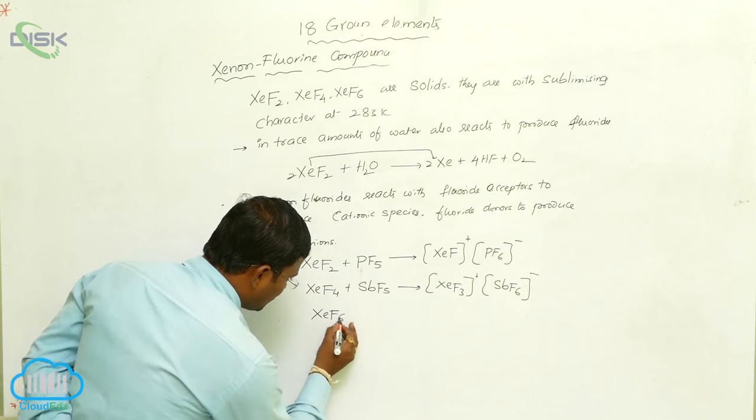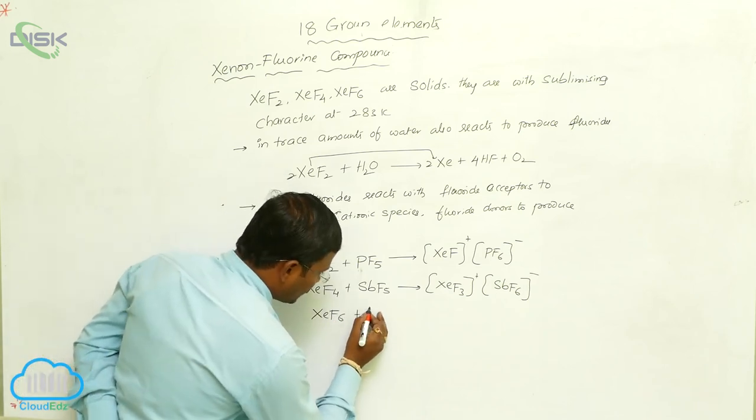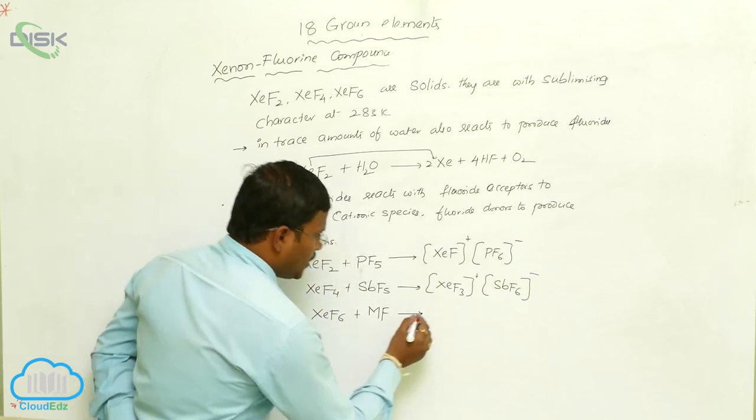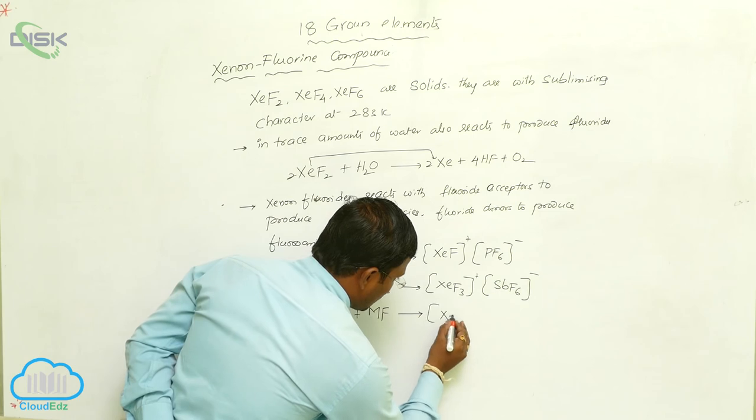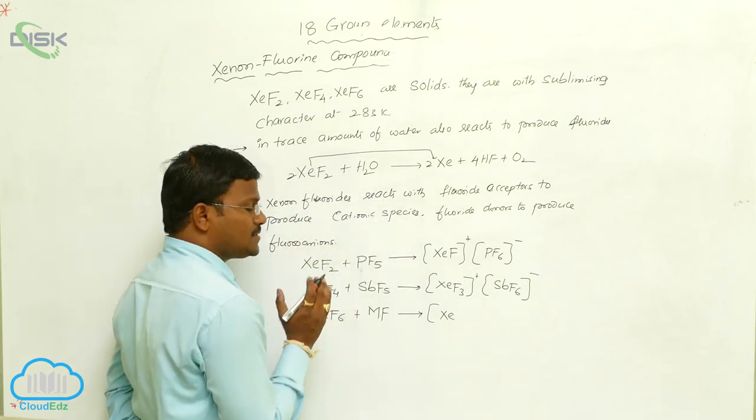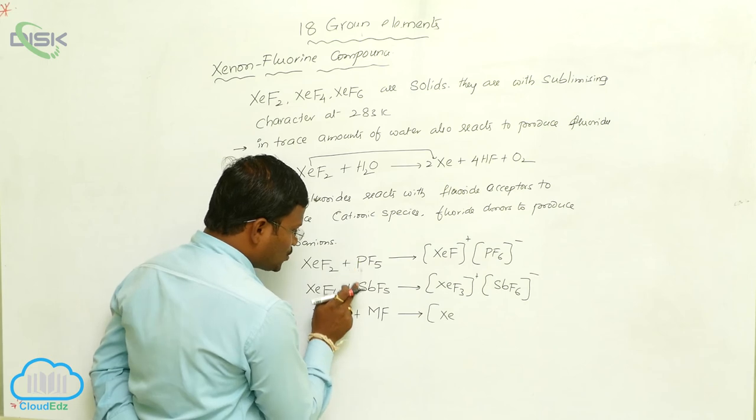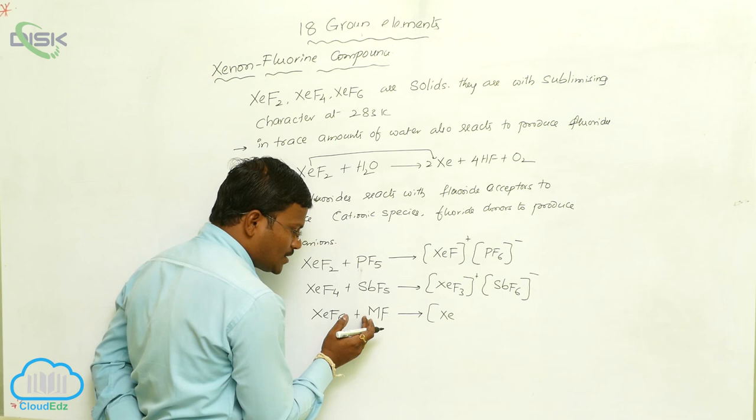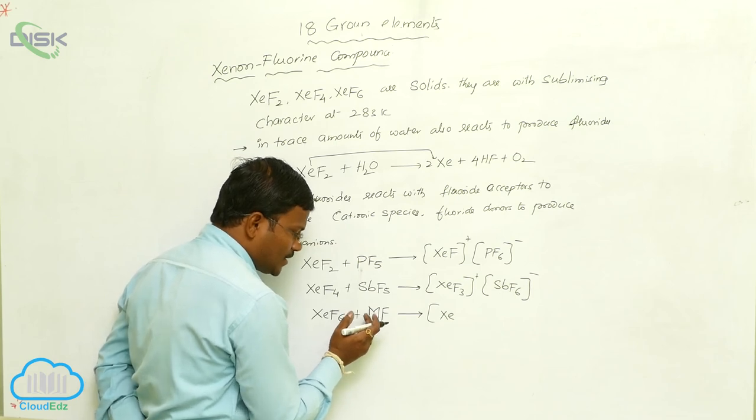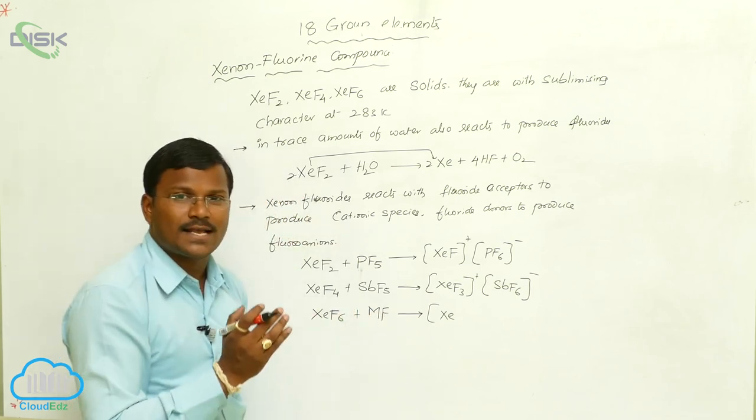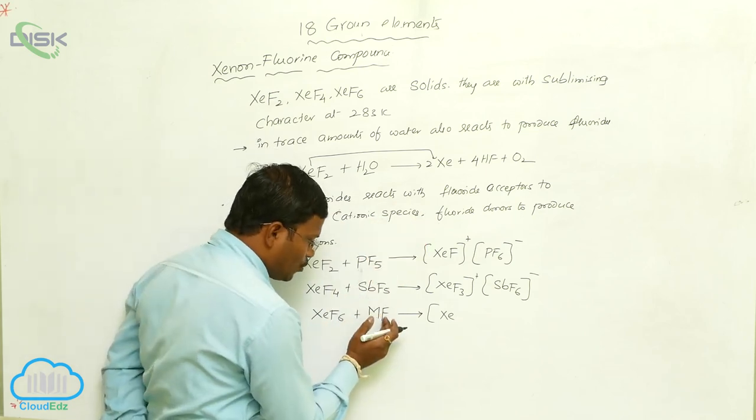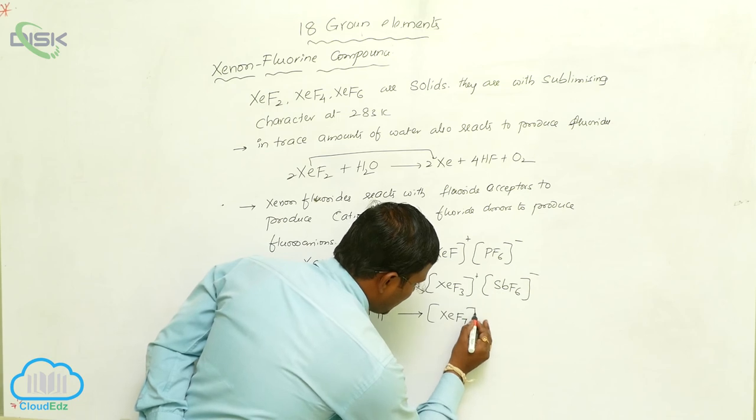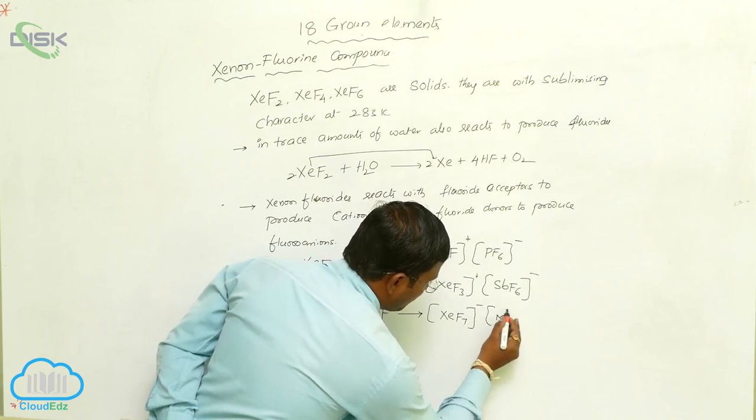Similarly, when xenon hexafluoride reacts with MF, metal fluorides, the fluorine now works as fluoride donor. In the previous cases, these work as fluoride acceptors, whereas in this reaction, metal fluorides work as fluoride donors. They donate their fluorine towards XeF6 and convert into XeF7- and M+.